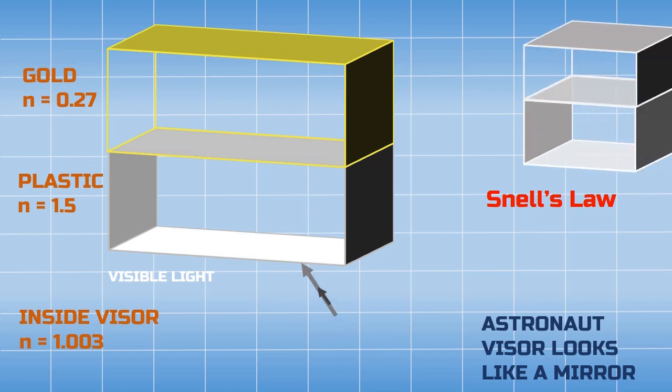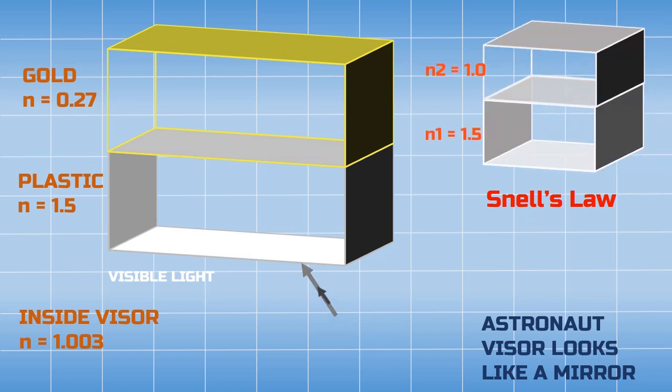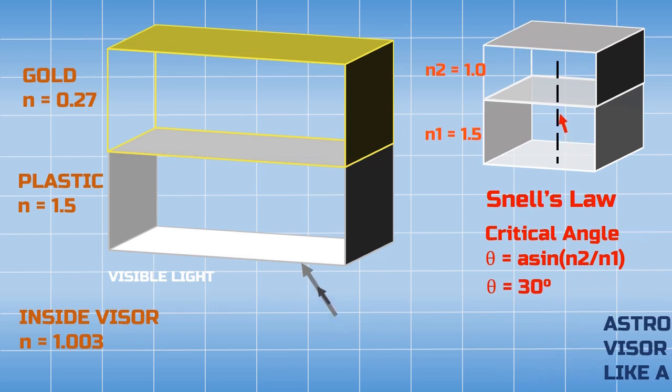According to Snell's law, when light travels from a medium of higher refractive index to a lower refractive index, if it is incident at the interface at an angle less than the critical angle, then light can easily pass to the other medium. But if the incidence angle is greater than the critical angle, then light is reflected back to the same medium due to a phenomenon known as total internal reflection.